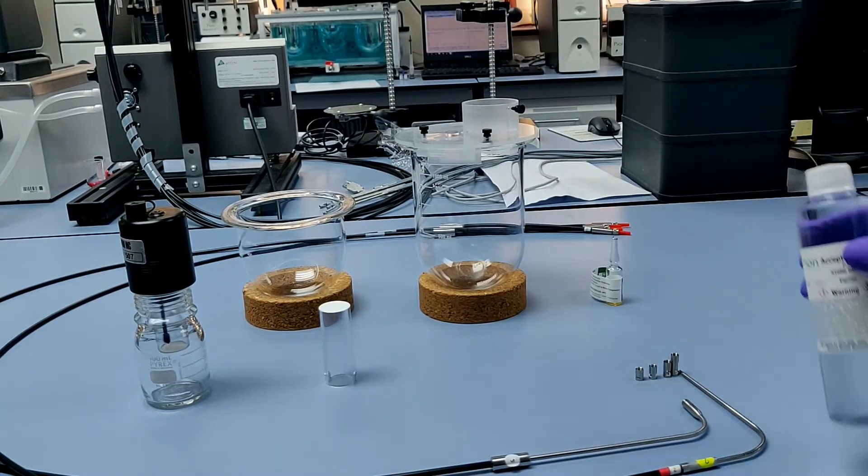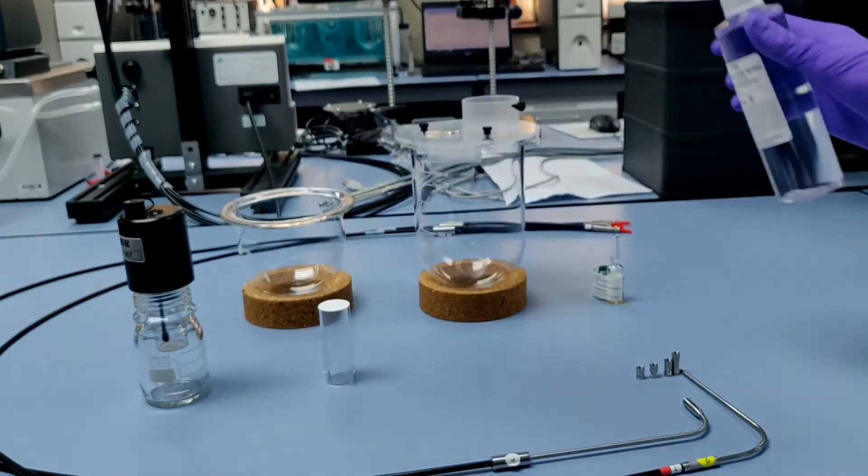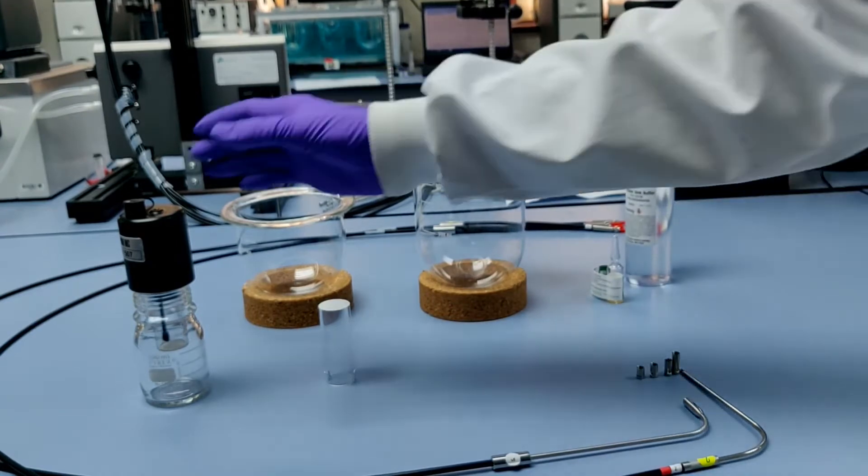During a typical assay, the acceptor chamber will be filled with Pion acceptor sink buffer. This contains chemical scavengers which provide sink conditions for the receiver chamber.